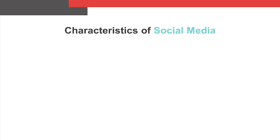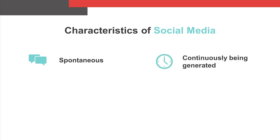To understand why experts often decide to rely on both types of data, let's first take a high-level look at the characteristics that make social media data unique. Social media data are generated spontaneously, unprompted by a researcher. The data are continuously being generated. Social media captures real-time conversation as events of interest are unfolding. The data serve as a historical record of the conversation surrounding past events. And finally, since humans are infinitely creative and indirect in how we express ourselves, social media data are messy and unstructured.